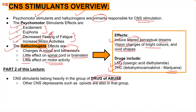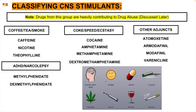Part two of this lecture covers drug abuse. CNS depressants such as opioids are also in the drug abuse group, but this lecture is primarily on CNS stimulation. The drugs from the CNS stimulant group heavily contribute to drug abuse. We've divided them into categories: coffee, tea, and smoke derivatives — caffeine, nicotine, and theophylline. Caffeine is from coffee, nicotine from smoke, and theophylline is derived from tea.